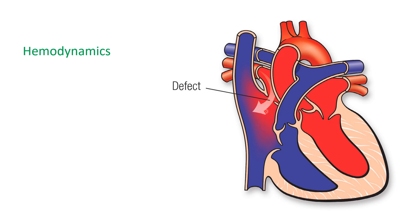The right atrium will have two to three times more blood than normal. Suppose the left ventricle is pumping 5 liters per minute; then the right ventricle is pumping two to three times higher — 10 to 15 liters per minute to the pulmonary artery. This blood goes to the lung, so the lungs will be plethoric and there will be pulmonary hypertension.